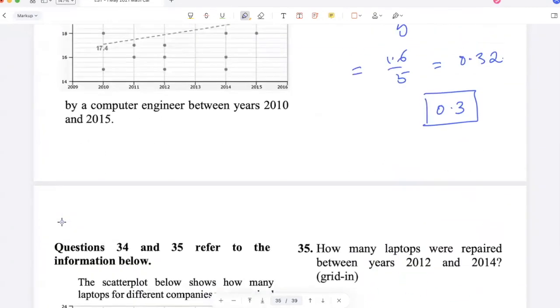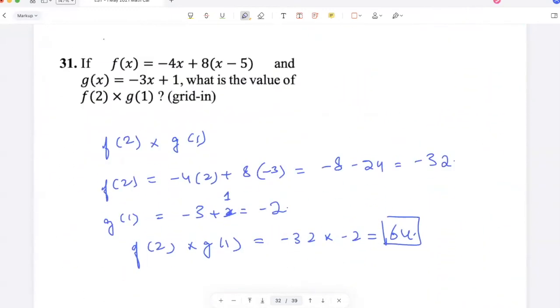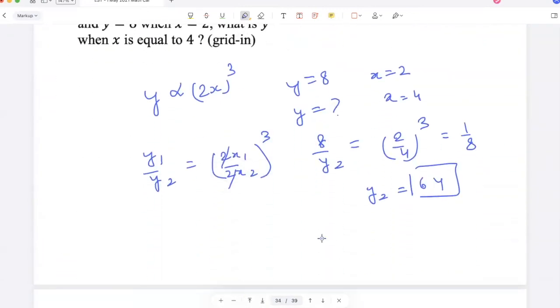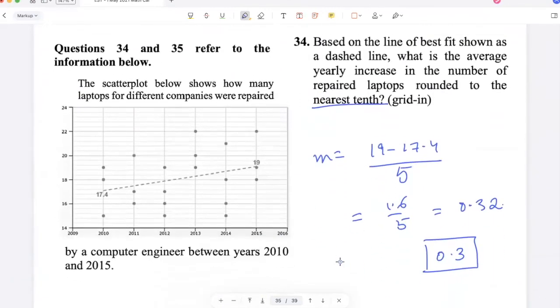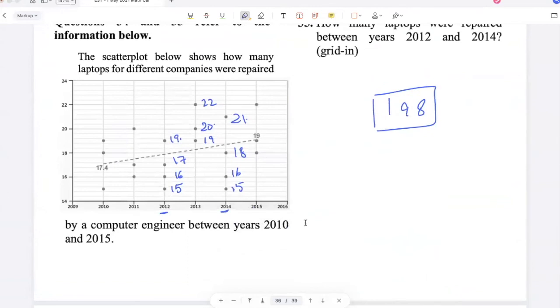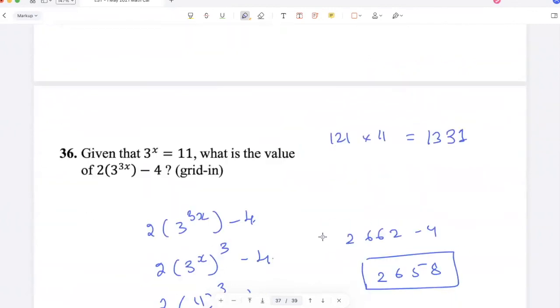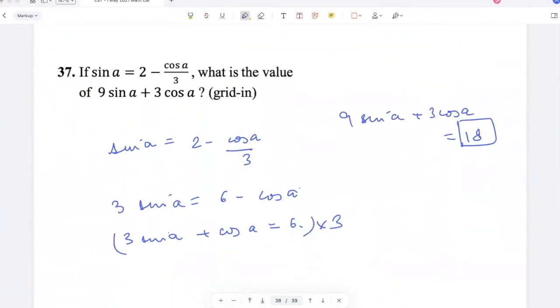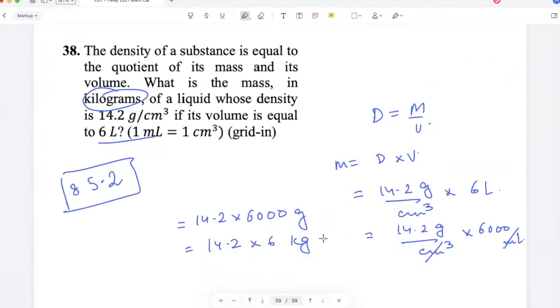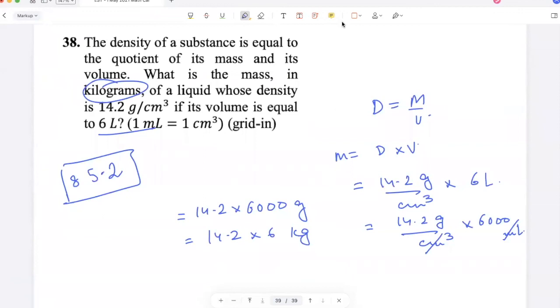That was the grid-in questions. Let's grade it. Answer key: question 31 is 64, 32 is 39 by 5, 33 is 64, 34 is 0.3, 35 is 198, 36 is 2658, 37 is 18, and 38 is 85.2. We got all correct. Hope this exercise helped. If it did, hit like and subscribe to the channel. I'll see you in a new video soon. Take care, bye-bye.